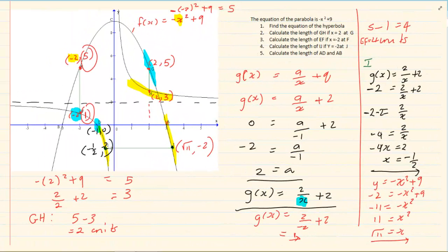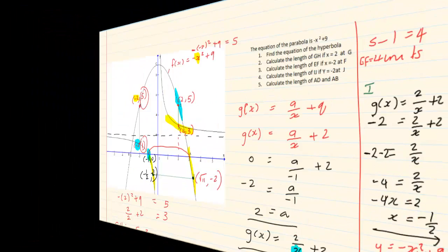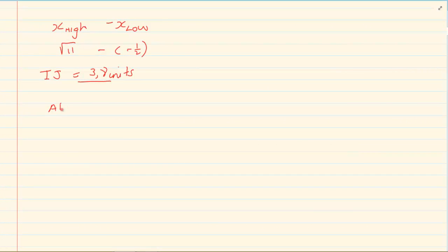Now, they are saying calculate the length of AD. These are easy questions you can see just by looking at the graph. AD goes from x equals 3 to x equals minus 1, so it's going to be 3 minus minus 1 which is equal to 4 units. Remember: the x of the high minus the x of the low.